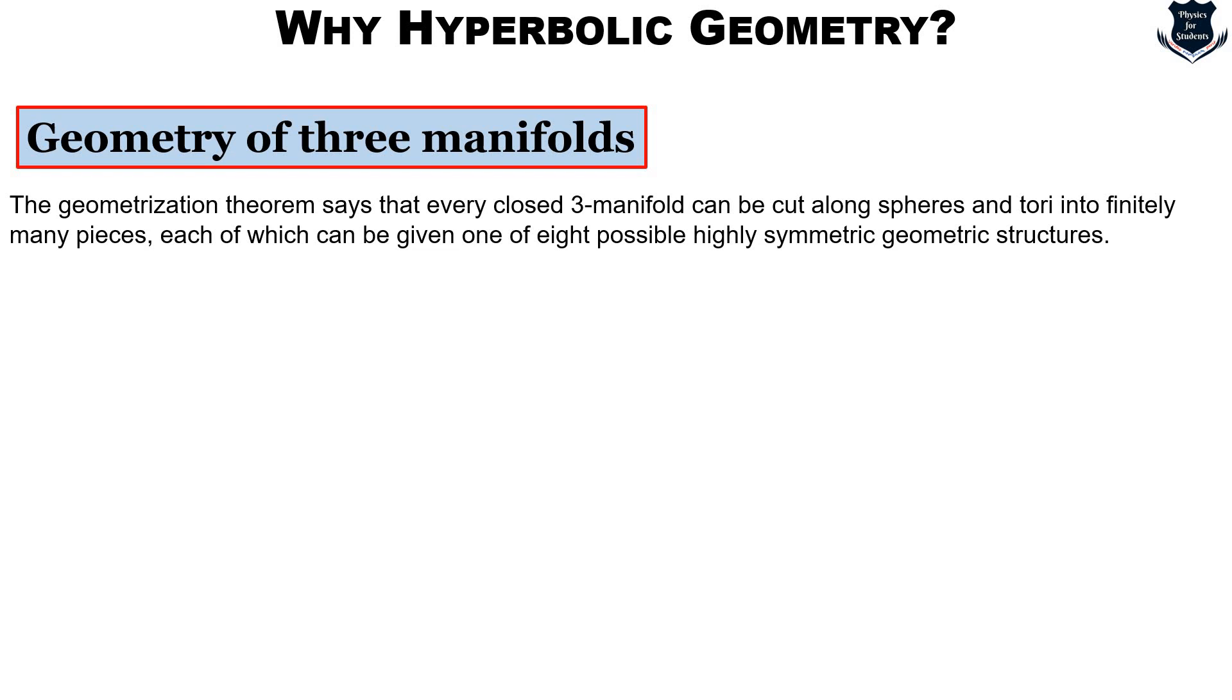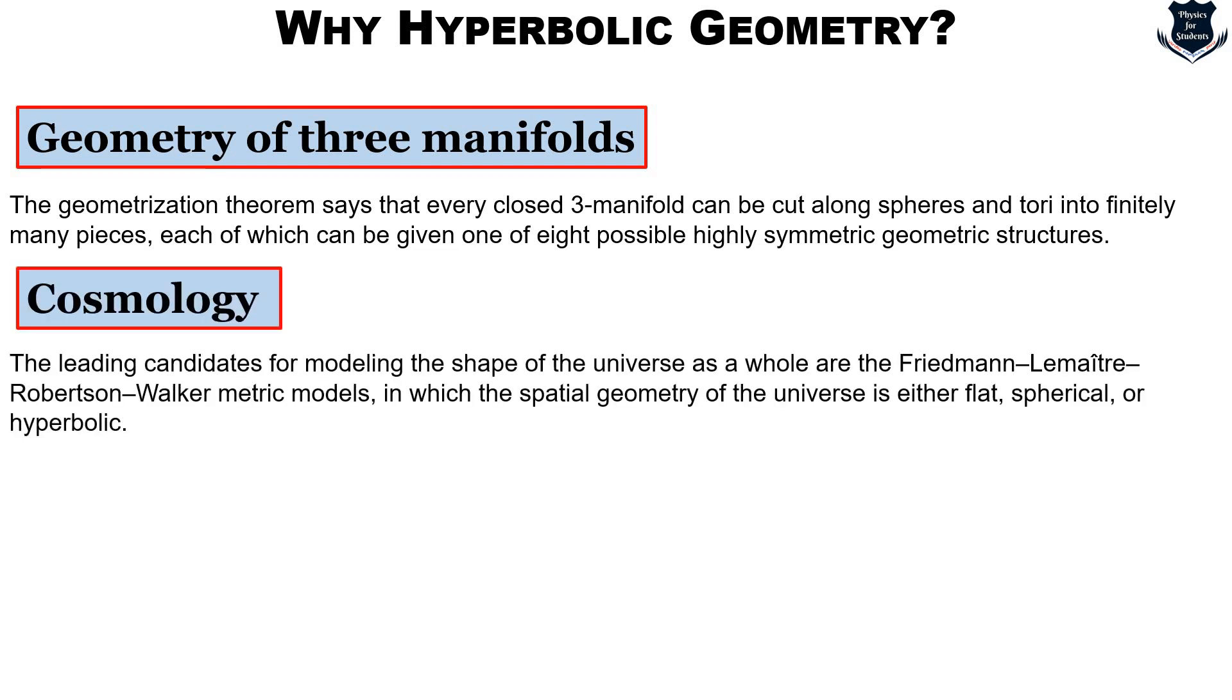When I talk about geometry of 3-manifolds, I am trying to mean that the geometrization conjecture theorem says that every closed 3-manifold can be cut along spheres and tori into finitely many pieces. One of 8 possible highly symmetric geometric structures. By far the richest of these structures is hyperbolic geometry which accounts for most 3-manifolds. It is also relevant in cosmology because the leading candidates for modeling the shape of the universe as a whole are the Friedman-Lemaitre-Robertson-Walker models in which the spatial geometry of the universe is either flat, spherical or hyperbolic, which one depends on the average density of matter and energy and the value of the cosmological constant.